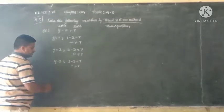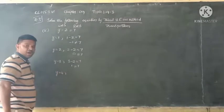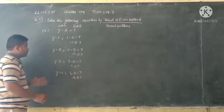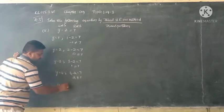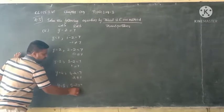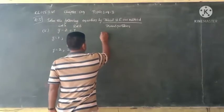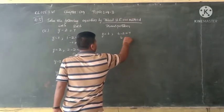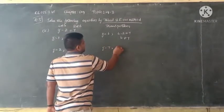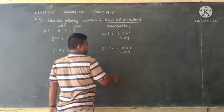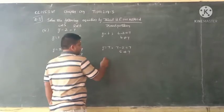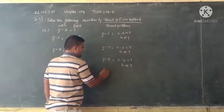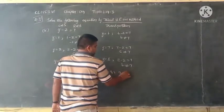When y equals 4, we get 4 minus 2 equals 2, which is not equal to 7. When y equals 5, we get 5 minus 2 equals 3, not equal to 7. When y equals 6, we get 6 minus 2 equals 4, not equal to 7. When y equals 7, we get 7 minus 2 equals 5, not equal to 7. When y equals 8, we get 8 minus 2 equals 6, not equal to 7.